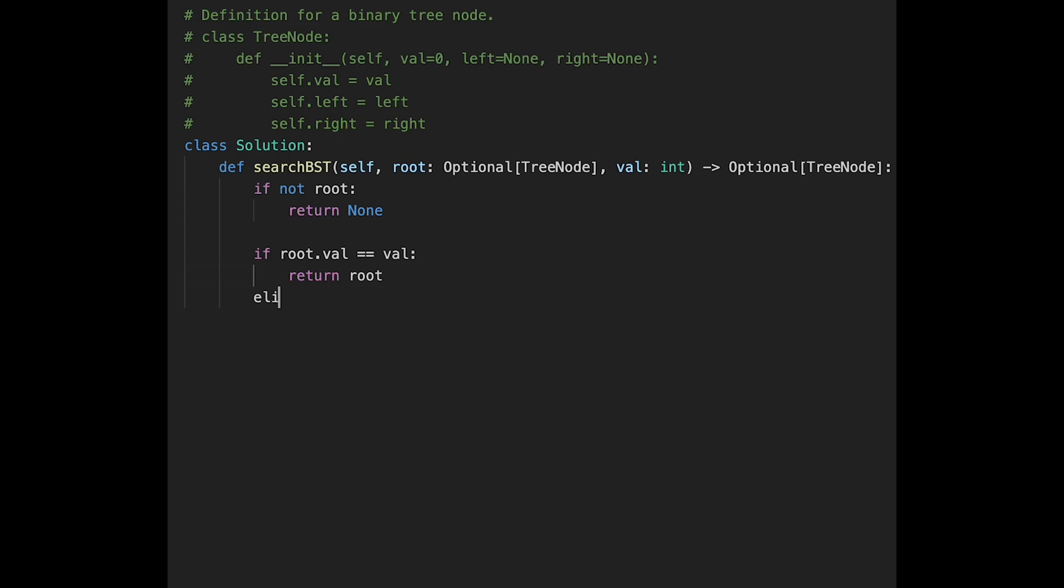And else, if root value is greater than value, in this case, we should go to the left side, right? So return self, call the same function again, searchBST, and pass in root.left, because we want to go to the left side. And then pass in the value.